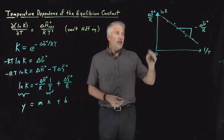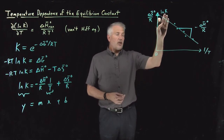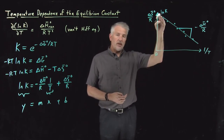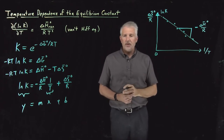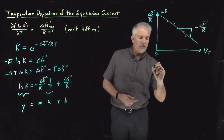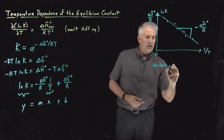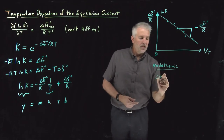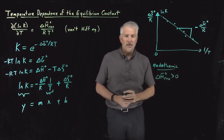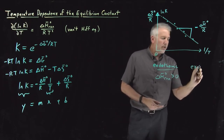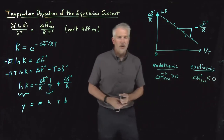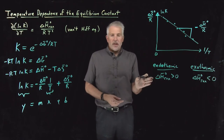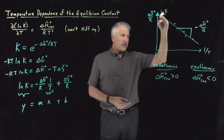The log K will change linearly with 1/T, but not necessarily in a downward direction. The slope is negative ΔH over R, but ΔH does not have to be positive. We can have endothermic reactions where ΔH is positive, or exothermic reactions where the products are lower in enthalpy than the reactants and ΔH is negative. The graph shown here is for the endothermic case: if ΔH is positive, the negative sign makes the slope negative.